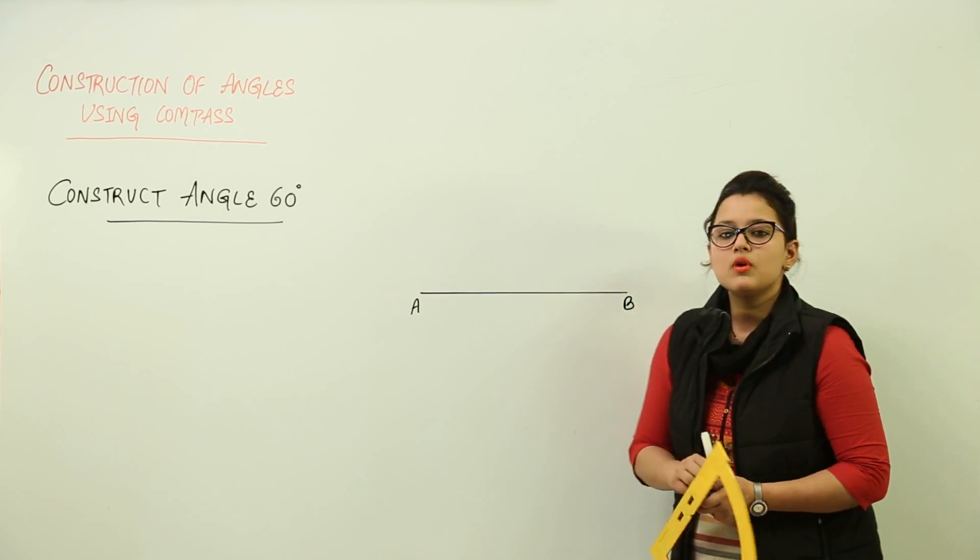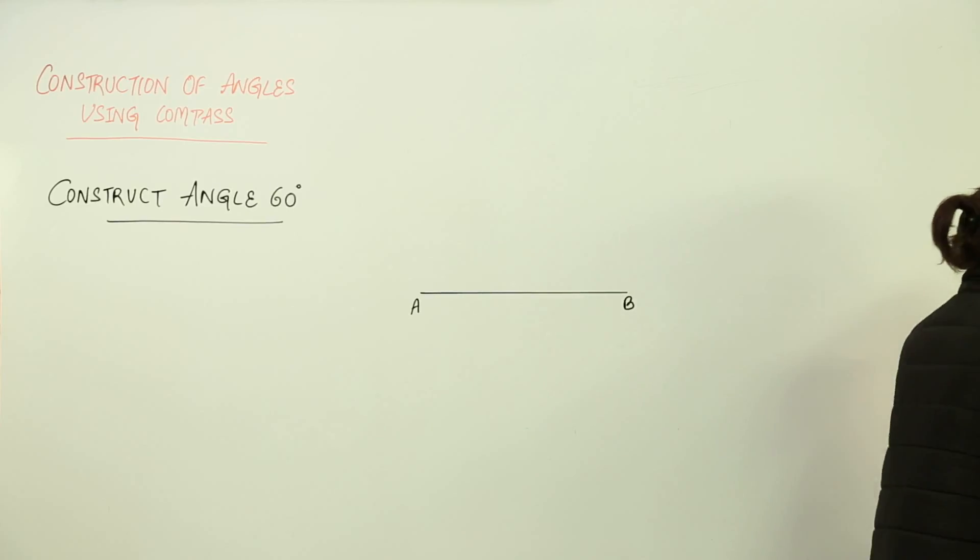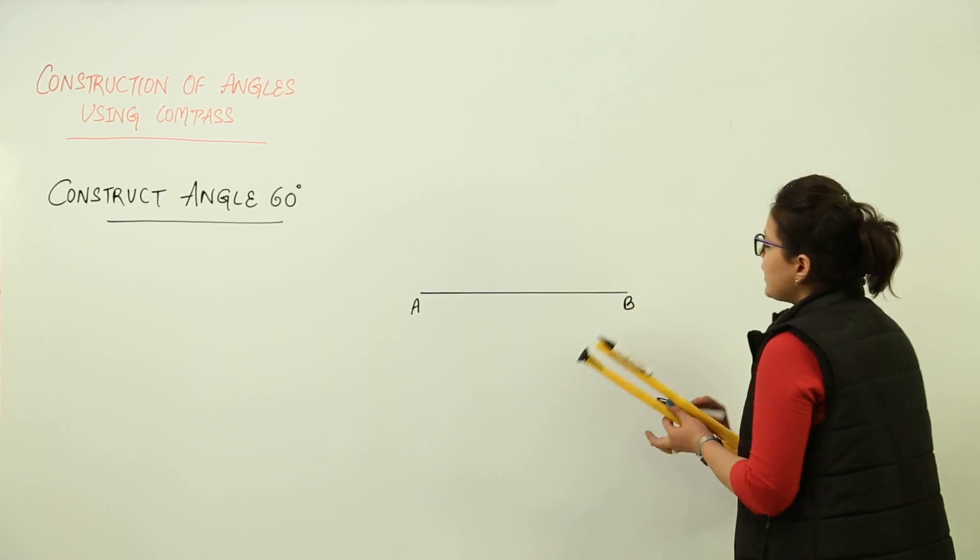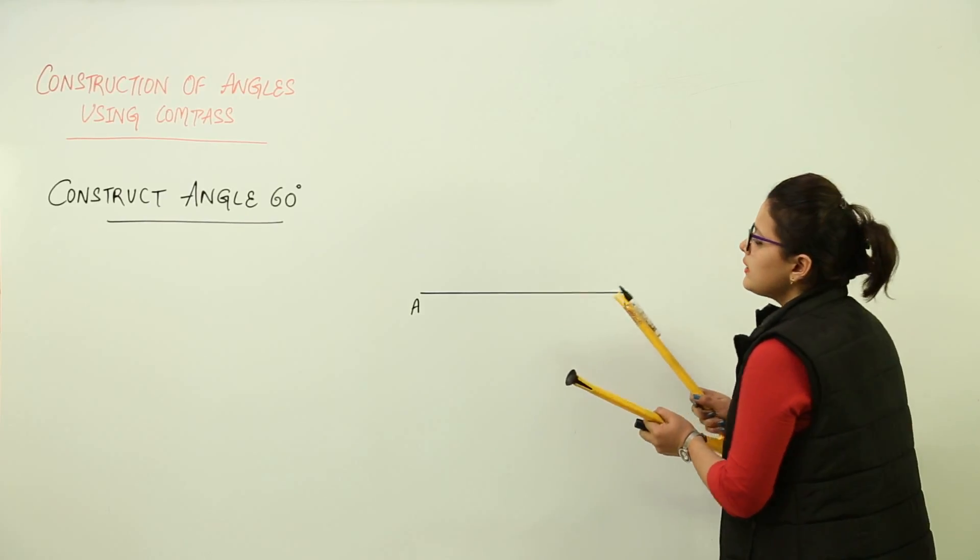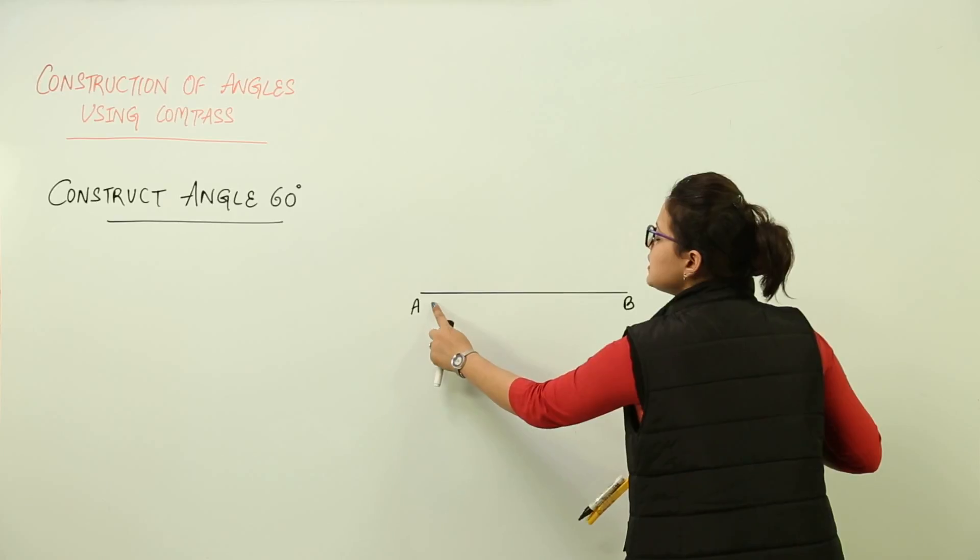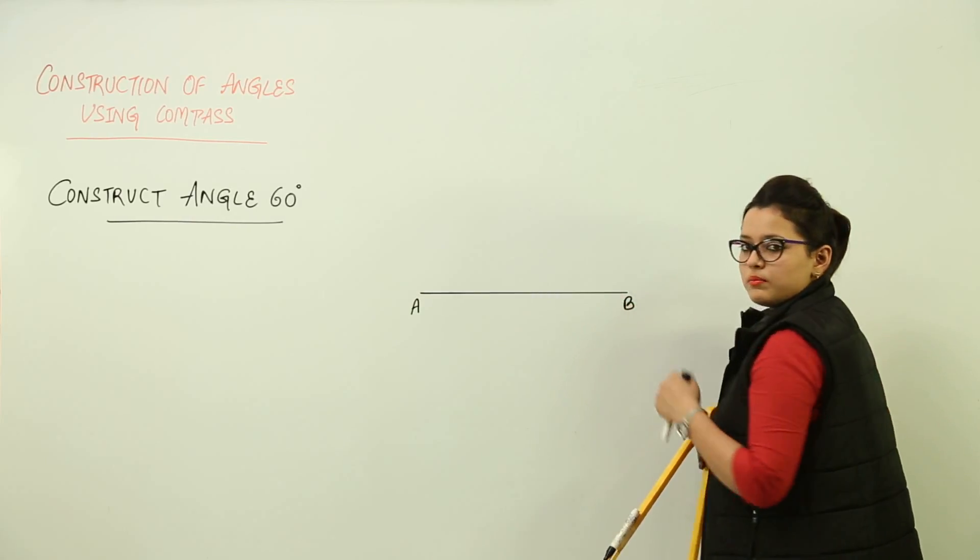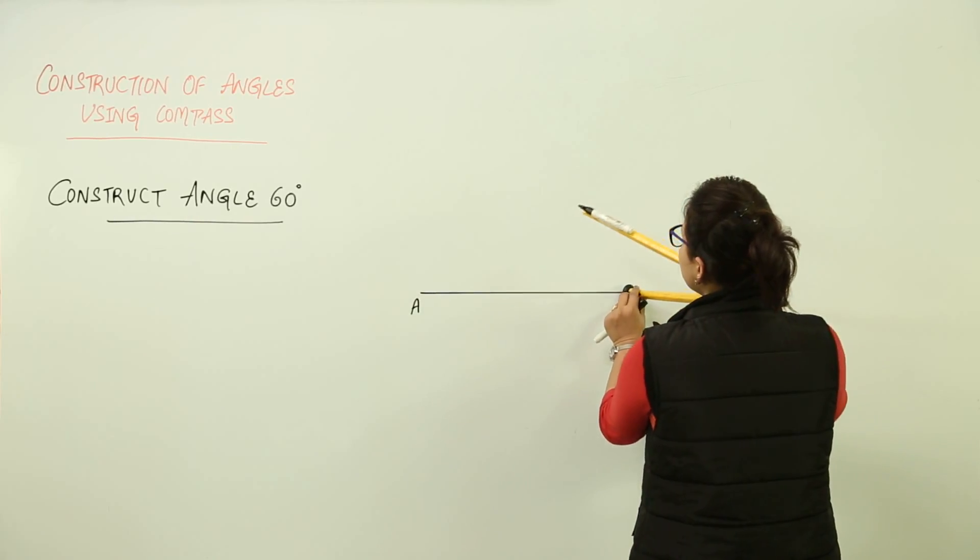Now the work of compass starts. You take a compass and the radius of your choice. You open it and you can make 60 degrees either on point A or on point B. I am making it on point B.